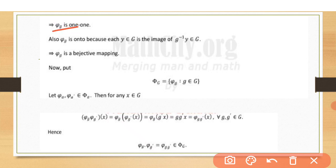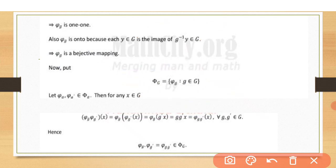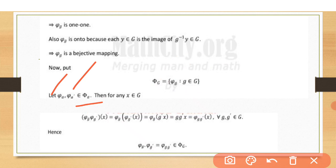Since both G's are the same sets with the same elements, phi_g is bijective. Now we take a subgroup from the second G — the group in which we are embedding the first G. The elements of phi(G) look like {phi_g : g ∈ G}. For phi_g and phi_{g'} belonging to phi(G), we examine how they compose.